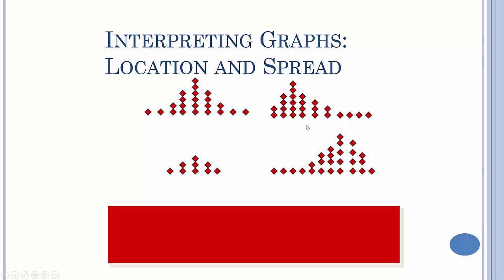So location and spread: we look at these things and go, what does that tell us about our data? This is fairly symmetrical, a bell curve, fairly symmetrical. This one is skewed to the right because it has a long tail to the right, and this is skewed to the left because it has a long tail to the left.